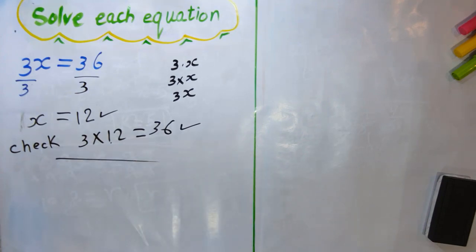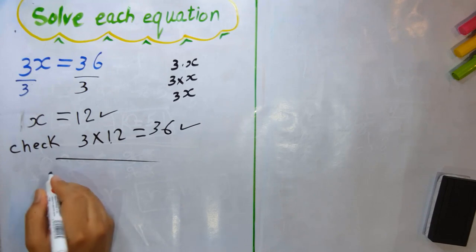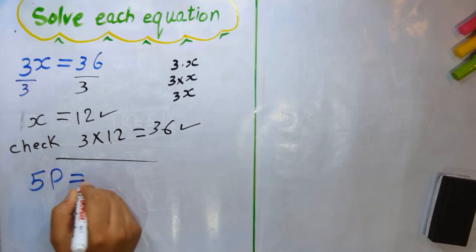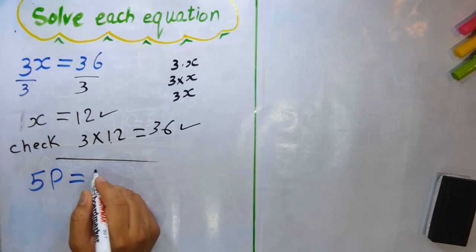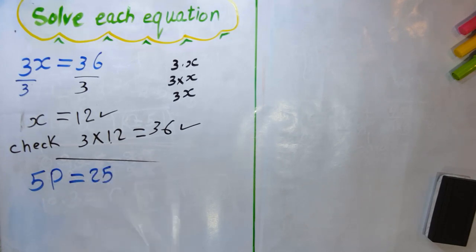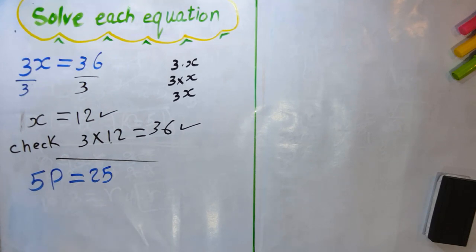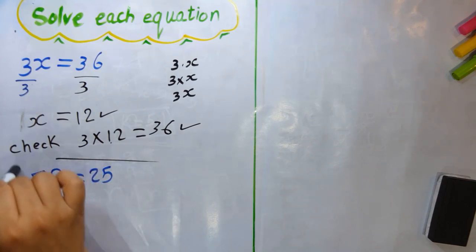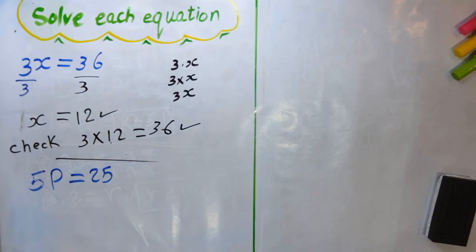Next question: 5b = 25. We want to solve this equation. Since 5b means 5 multiplied by b, to make the variable alone we need to remove 5.